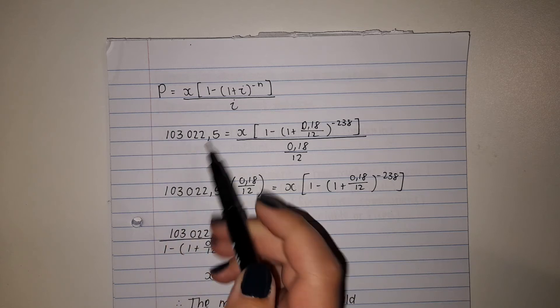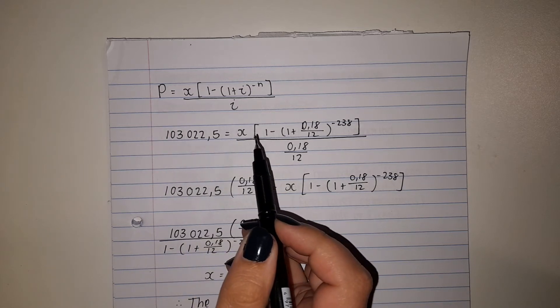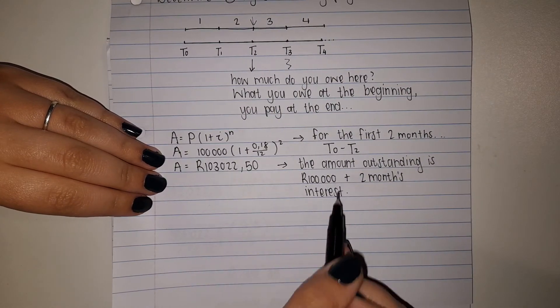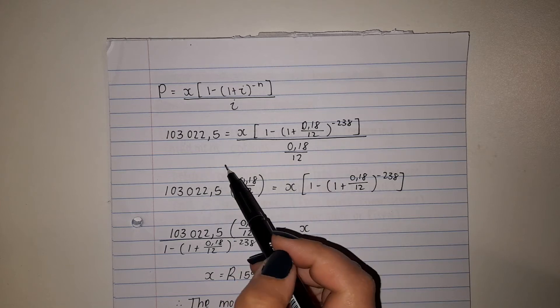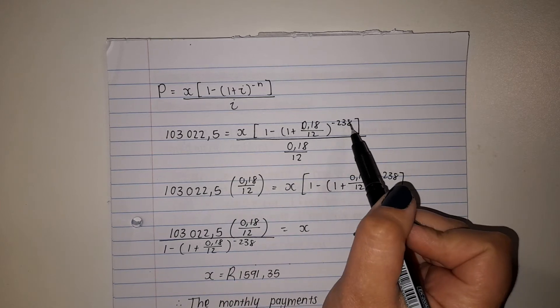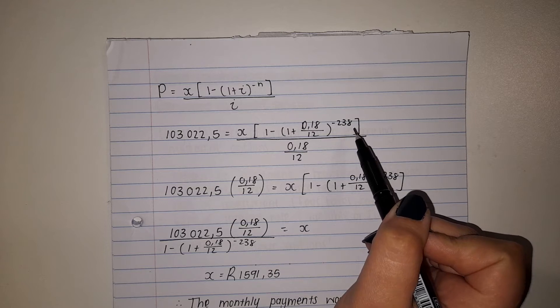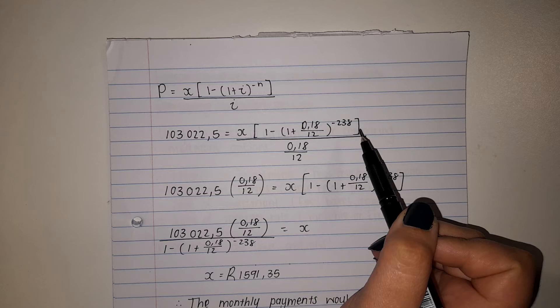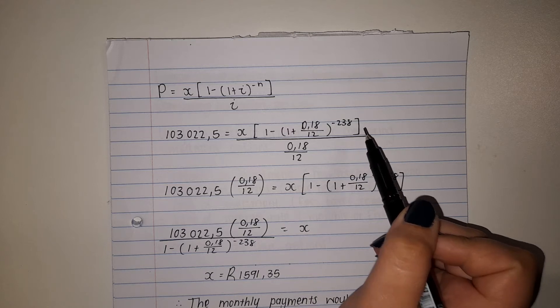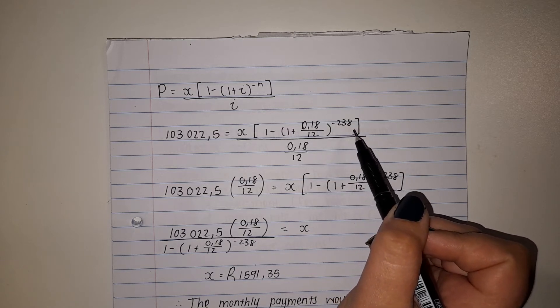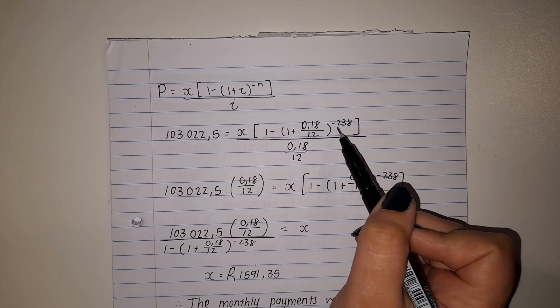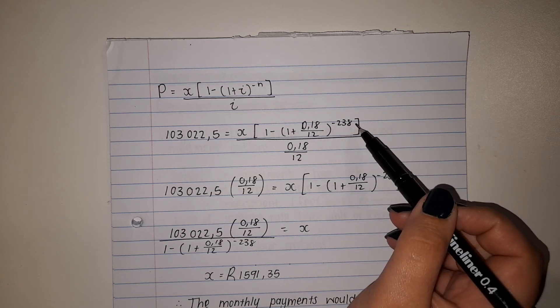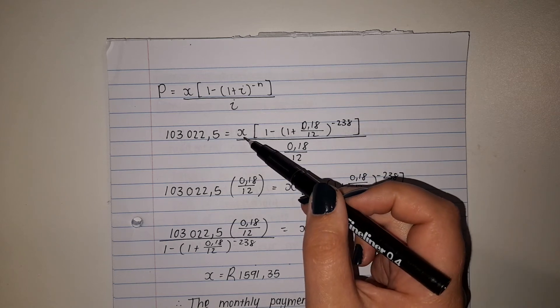Now our present value that we owe is this amount here that we got from the 100,000 that we started with plus our two months interest. We substitute that and we substitute our months in over here. Please remember this is the amount of payments we need to pay and they said in 238 equal payments. So we know how many we need to pay but we don't know what we need to pay yet.